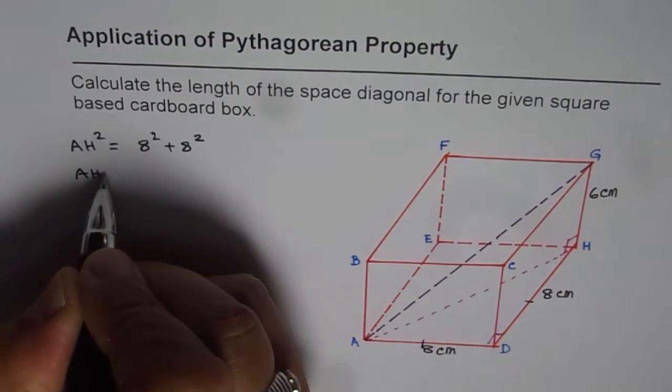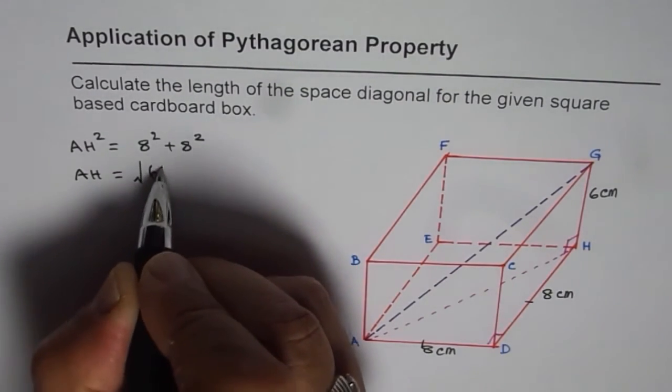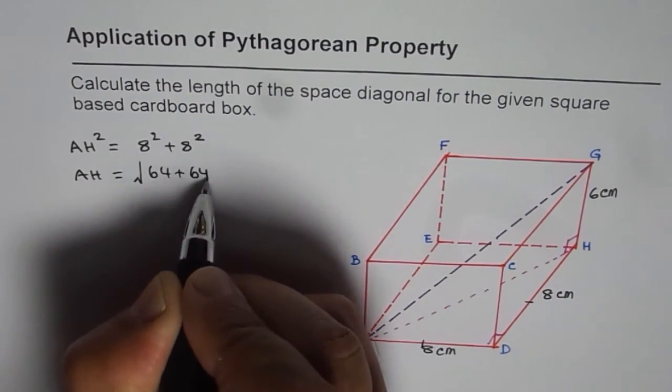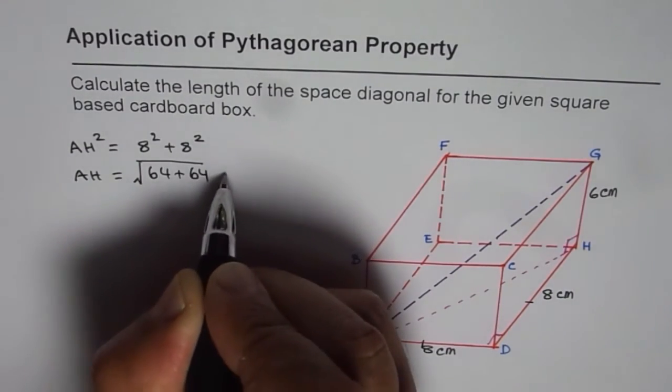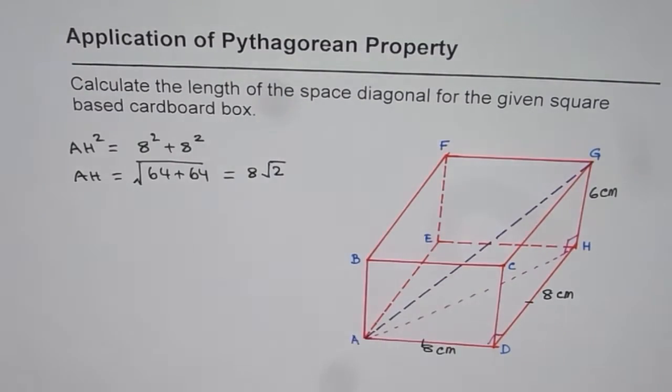So AH is equal to square root of 64 plus 64. That is 2 times 64 and that gives you 8 square root 2 as your answer.